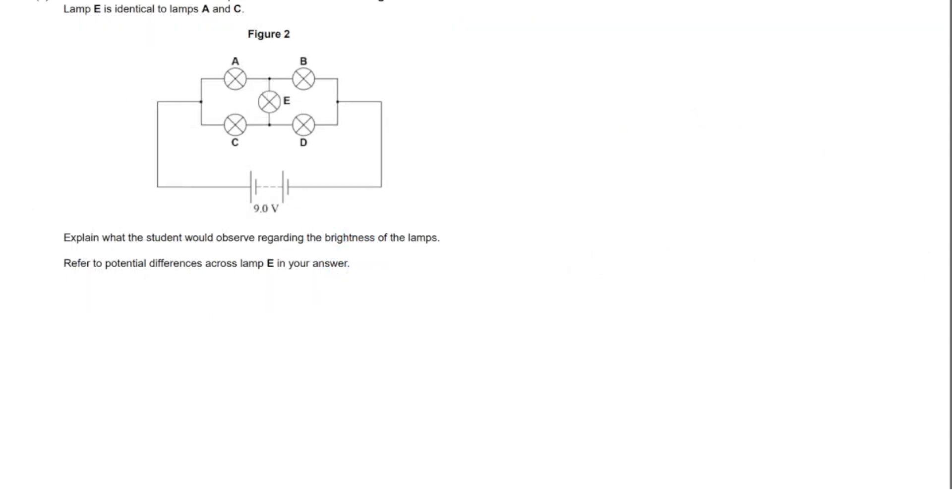In this circuit we have added an additional bulb labeled E between the top and the lower of the two loops. It's an identical bulb to A and C, and what effect does this have on the circuit? Well the trick here is to realize that we have a lot of symmetry going on.